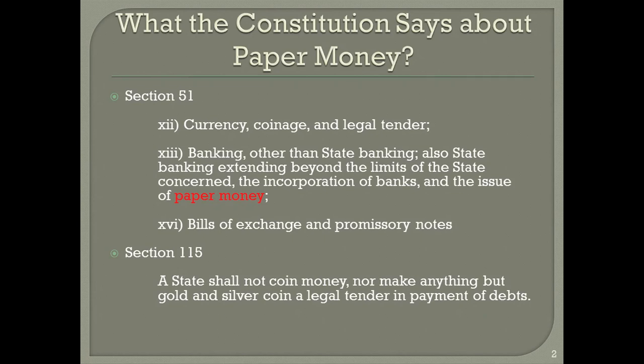Section 51 of the Australian Constitution defines the powers of Parliament. It grants the Federal Parliament the power to make laws with respect to subsection 12: currency, coinage and legal tender. Note that currency, coinage and legal tender appear in the same subsection, reflecting that coinage and legal tender were to be linked within the realm of currency. Subsection 13 covers banking other than state banking, the incorporation of banks, and most importantly the issuing of paper money. The concept of paper money is presented alongside banking, reflecting a similarly linked character.